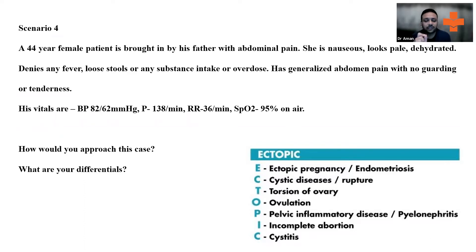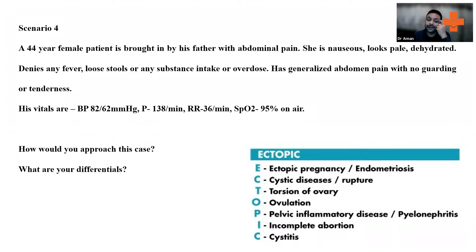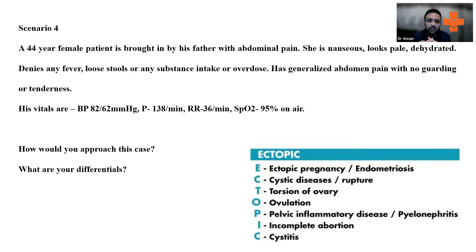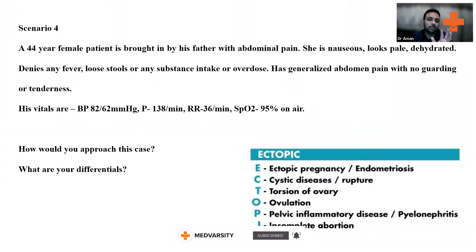The main concept: always ask for LMP. It's a very gray zone in India regarding whether you can do a urine dipstick or pregnancy test if the patient is not married — I won't go into that. But in the UK, every female patient gets a urine dip. I've had scenarios where patients were not good historians, but the urine dip came back positive for ectopic. Always take consent from the patient, their relatives, or parents if the patient is a minor.